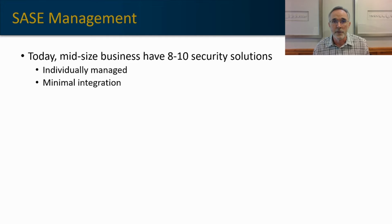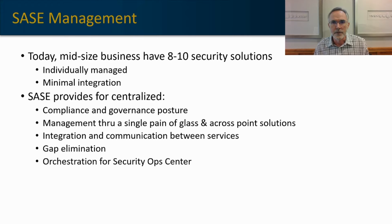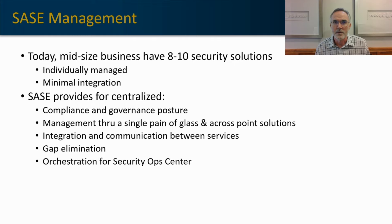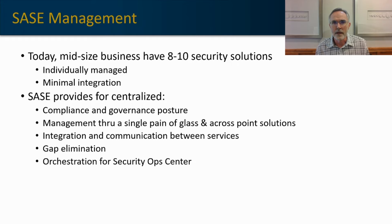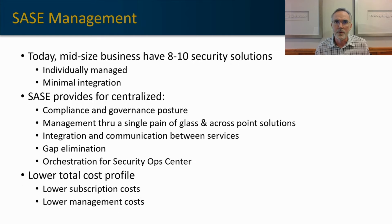Not only do we have network benefits, but we also have management benefits. Today most organizations have multiple security solutions layered on top of one another, individually managed and lacking integration — unless you have something like a SIEM bringing information together artificially. SASE promises the ability to have a single posture with a single governance platform, management through a single pane of glass, and orchestration across multiple point solutions that allow for uniformity and integration, eliminating gaps created by individual point solutions. And again, a lower cost profile — buying these things integrated means they're less costly to manage, and as a subscription cost, cross-product discounting is typically available.